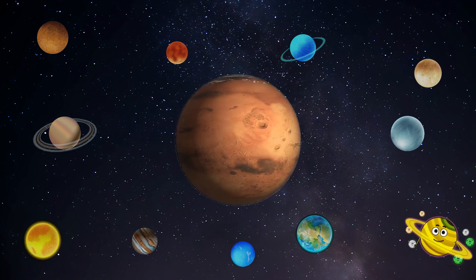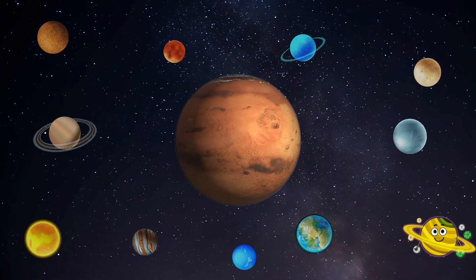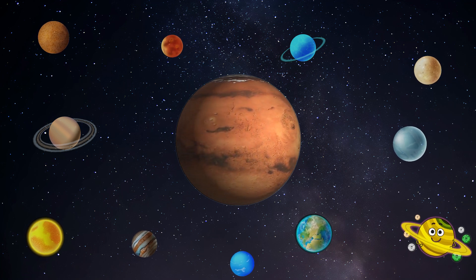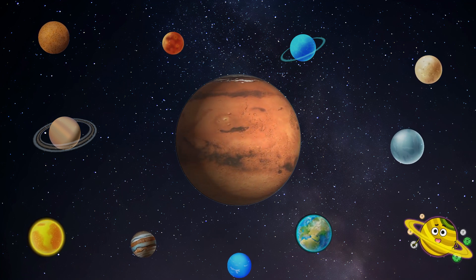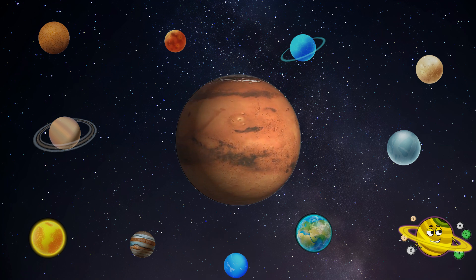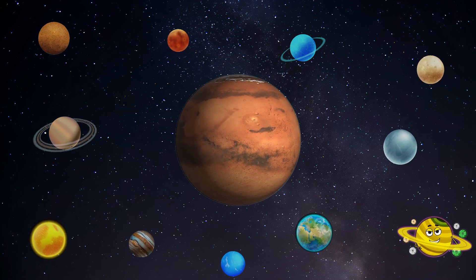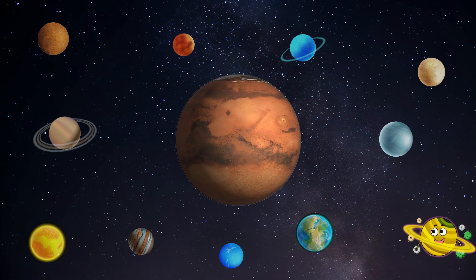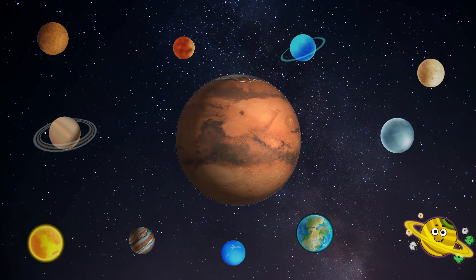As we journey on, we meet Mars, the red planet. Mars is like a rusty old warrior, covered in dust and mystery. It used to have rivers and volcanoes long ago, but now it's quiet and lonely. Mars is cold and windy, but it holds secrets of ancient adventures waiting to be discovered by brave explorers like us.